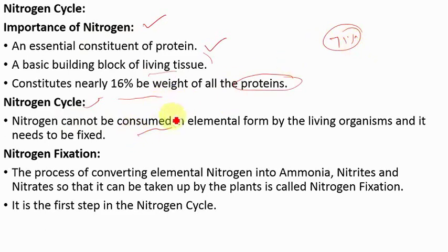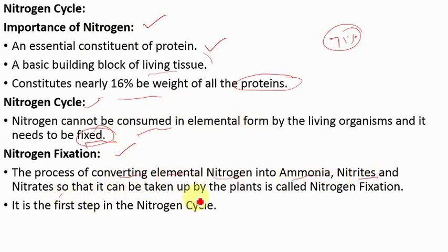Nitrogen is abundant but it cannot be utilized as it is — it needs to be fixed. You must know about nitrogen fixation, which is the first step in the nitrogen cycle. The process of converting elemental nitrogen into ammonia, nitrites, and nitrates so that it can be taken up by plants is called nitrogen fixation. Plants cannot take elemental nitrogen as it is, so it needs to be fixed. This is the first step in the nitrogen cycle.